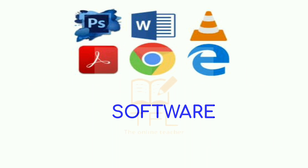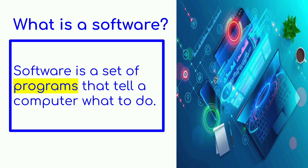See the pictures — these are all icons, or software icons that you might have seen on your computer or mobile phone. So let's see what is the definition for software. Software is a set of programs that tell a computer what to do. We are giving some set of instructions, and that set of instructions is our programs. So a group of programs combines together to form a software.